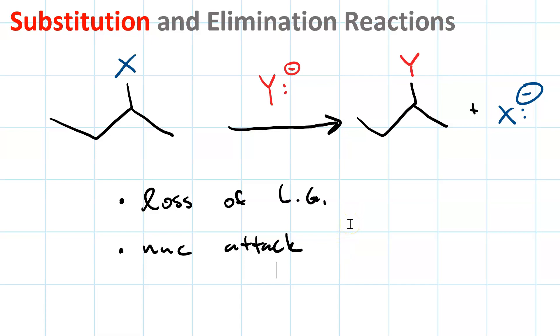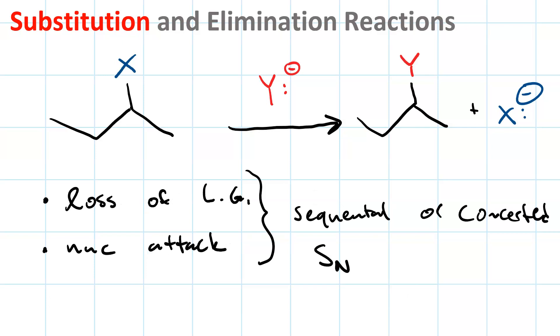Those can happen sequentially or they can happen at the same time. If it's sequential, we call it SN1. The S stands for substitution, the N stands for nucleophilic, and the 1 because the rate limiting step is unimolecular.